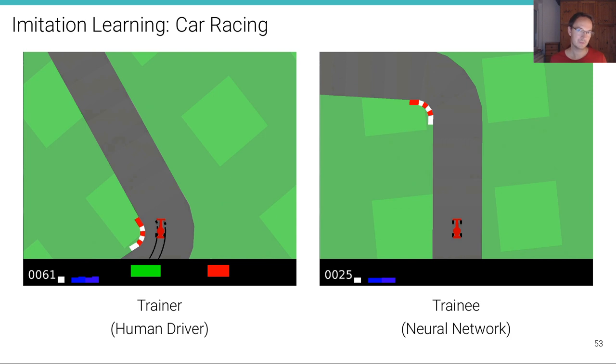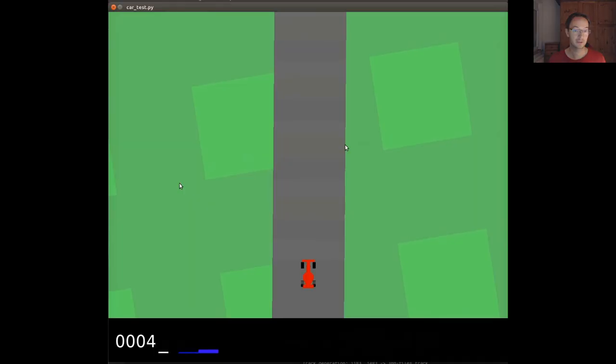Here is another example. This is what we've already looked at in the first lecture, which is the OpenAI Gym car racing environment, where also the coding challenges of this lecture will take place. On the left, you can see a human driver collecting training data for an imitation learner.